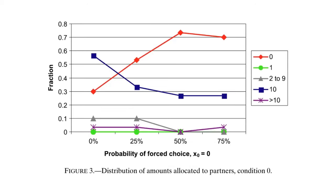This chart shows how offers change with P in circumstances the computer will offer 0 if selected. The x-axis shows P equal to 0, 0.25, 0.5, and 0.75. Each line represents a different bucket of offers. The red line is a proportion of dictators offering 0. The blue line represents the proportion of participants offering $10, a 50-50 split.